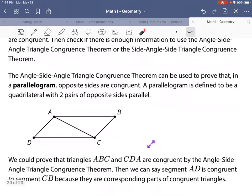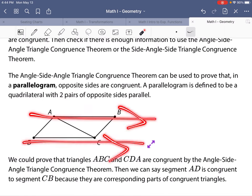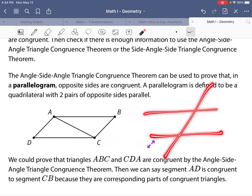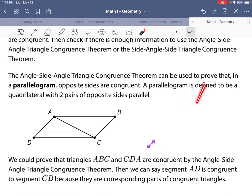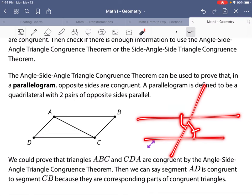So, angle-side-angle triangle congruence theorem can be used to prove that, in a parallelogram, opposite sides are congruent. A parallelogram is defined to be a quadrilateral with two pairs of opposite sides that are parallel. So, those two sides are parallel, these two sides are parallel to each other. And if you remember, when you have parallel lines, alternate interior angles are congruent.